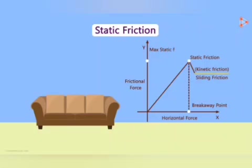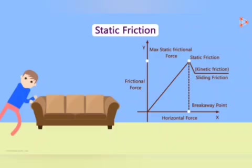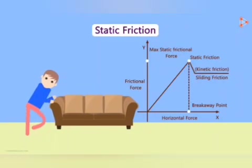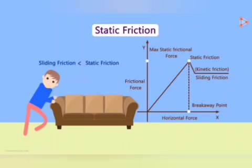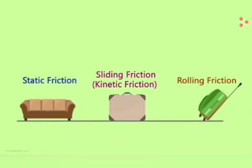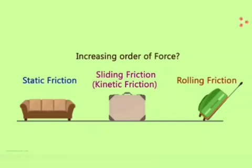Why is the sliding friction line at a lower level than the maximum static frictional force? If you've ever pushed a heavy object on the floor, you'd realize that pushing it is a little easier once it's in motion — because sliding friction is lesser than static friction. So we've seen three kinds of friction so far: static friction, sliding friction, and rolling friction. In increasing order of force: static friction is more than sliding friction, which is more than rolling friction.